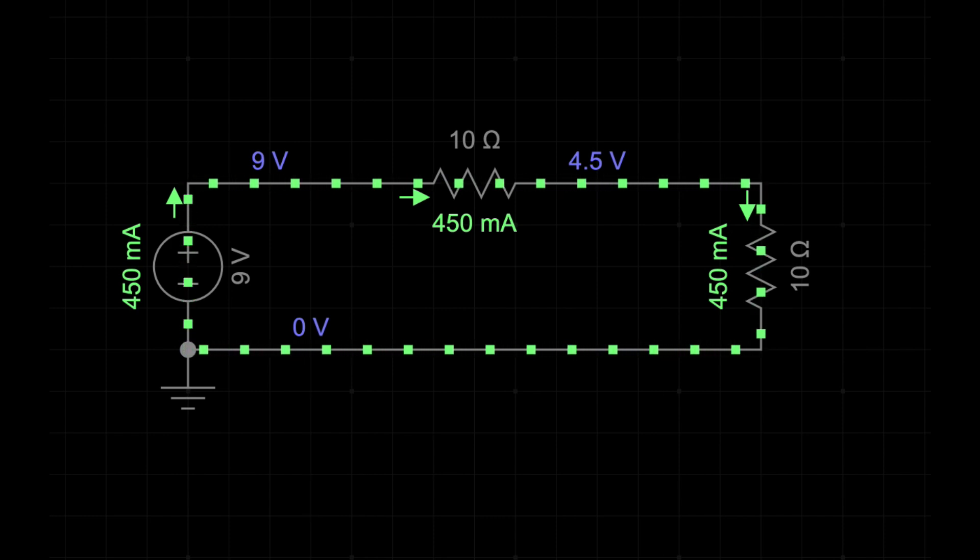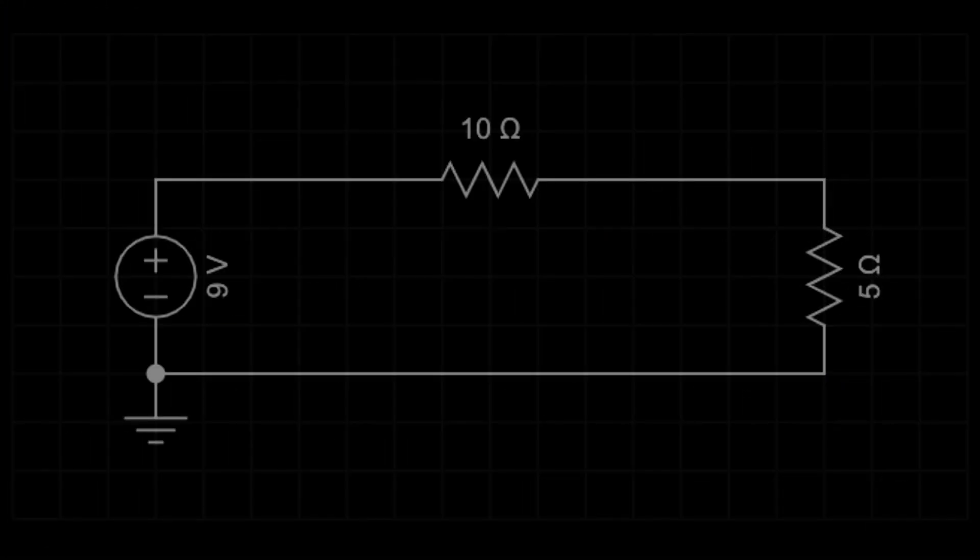The circuit diagram shows the voltage should be 4.5 volts. What if we require a voltage of 3 volts? In this case, we reduce the second resistor from 10 ohms to 5 ohms.